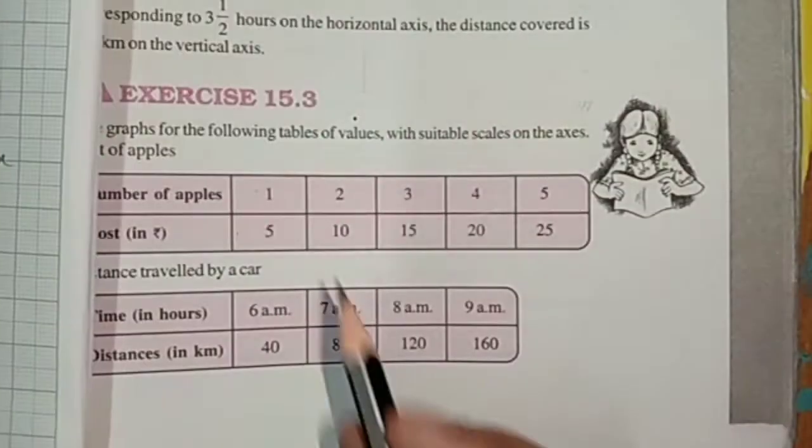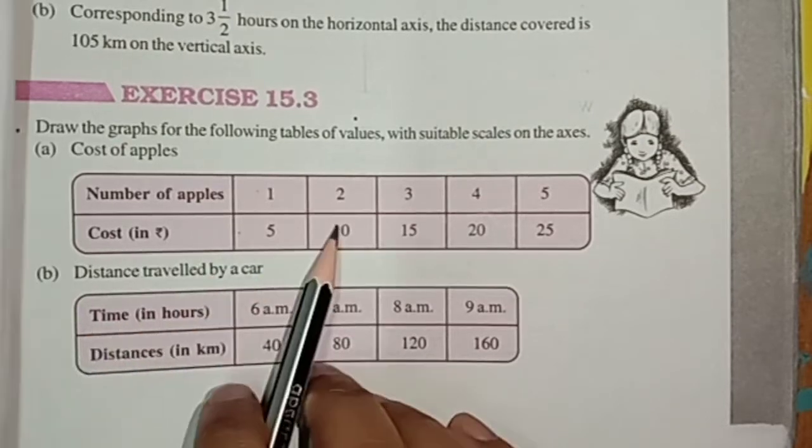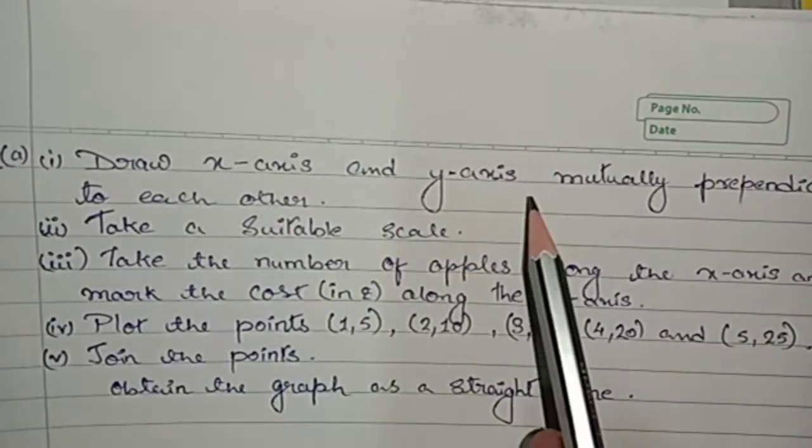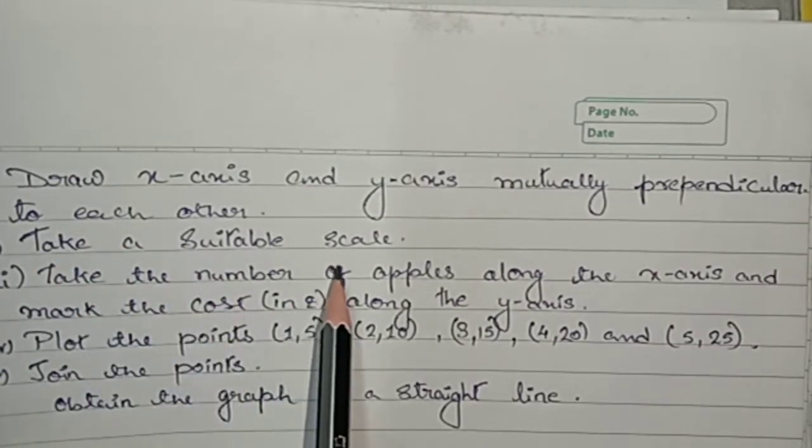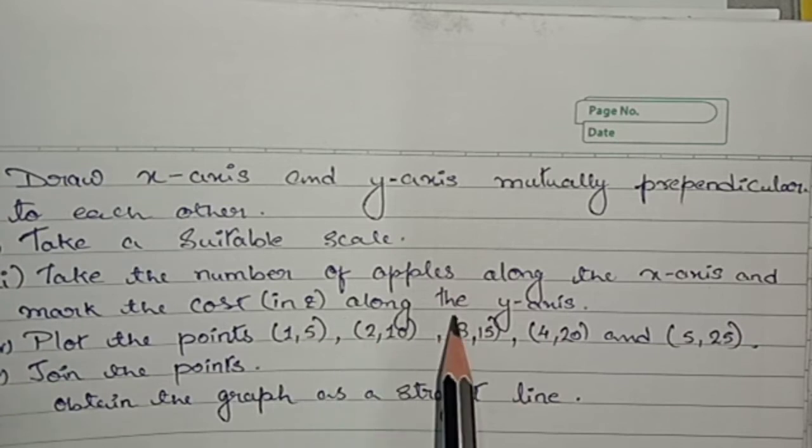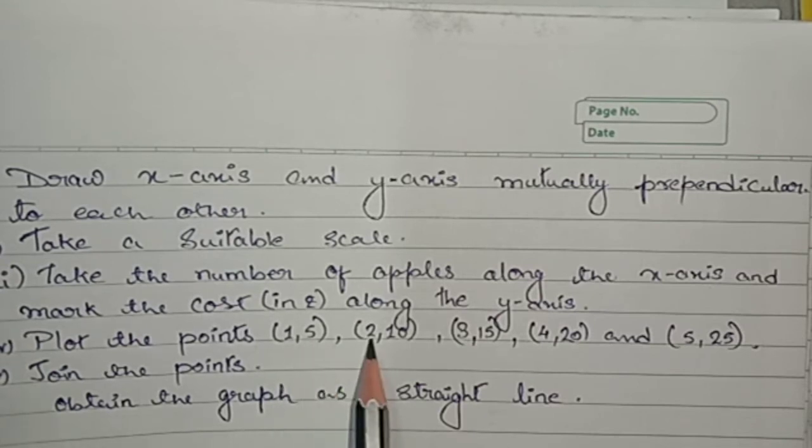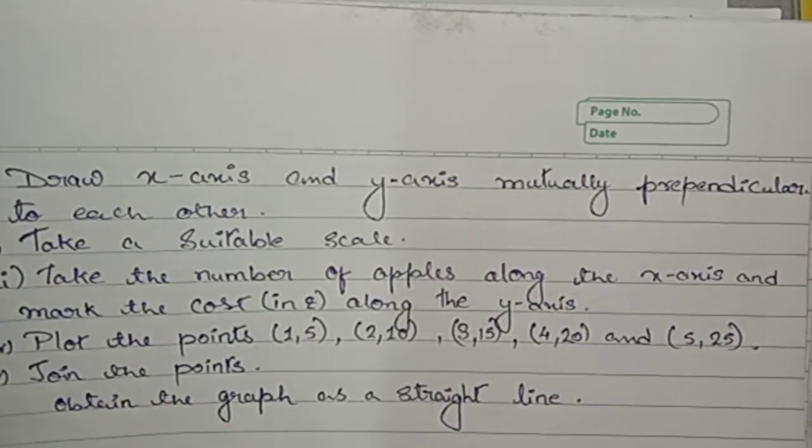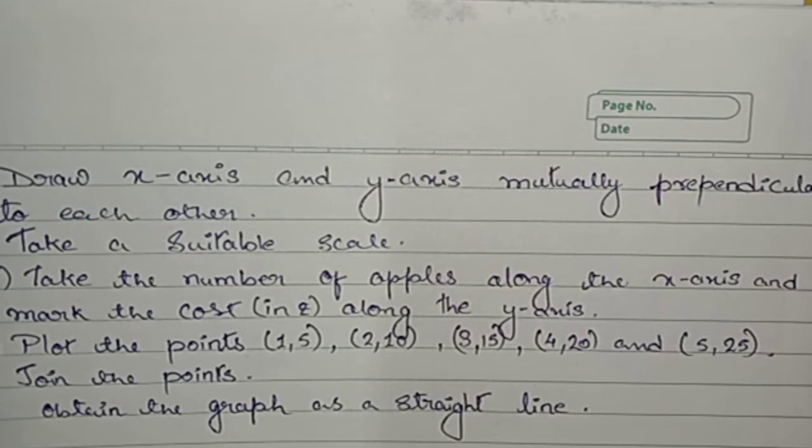The first is given number of apples is 1 and cost is 5. Before plotting graph, please students write this way in your copy: Draw x-axis and y-axis mutually perpendicular to each other. Take a suitable scale, take the numbers of apples along the x-axis, and mark the cost in rupees along the y-axis. Plot the points: 1 comma 5, 2 comma 10, 3 comma 15, 4 comma 20, 5 comma 25. Join the plots, and after joining the plots you will obtain a straight line.